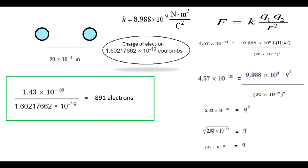The charge of the sphere is going to be divided by the charge of the electron. This gives us the number of electrons in the sphere. In this case the number is 891 electrons in the sphere.